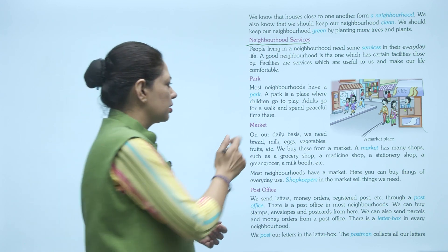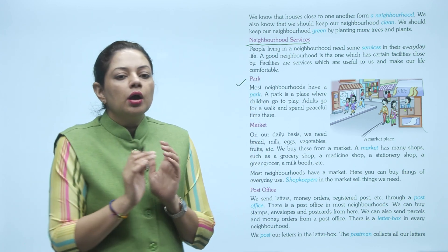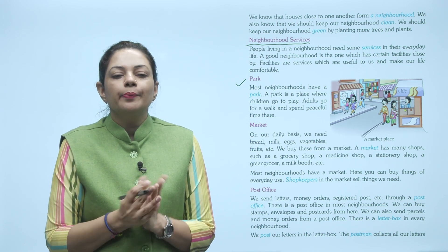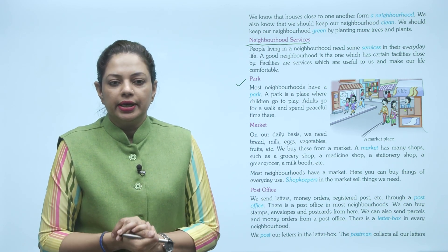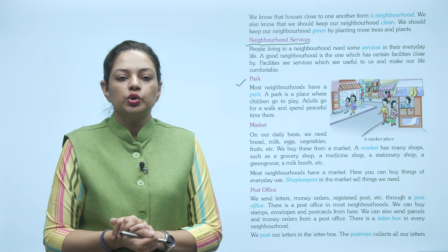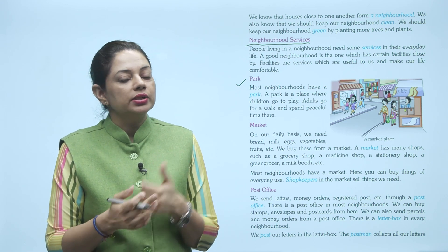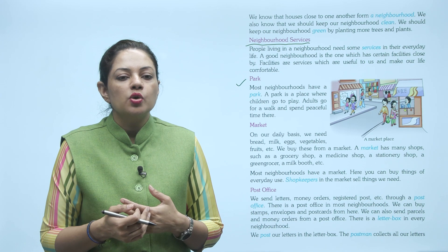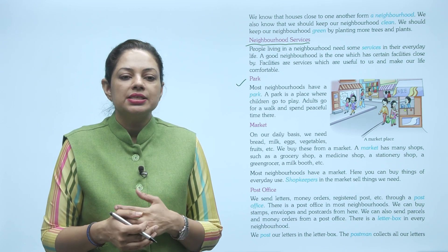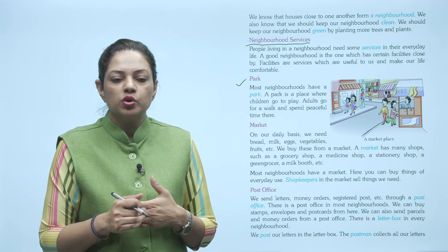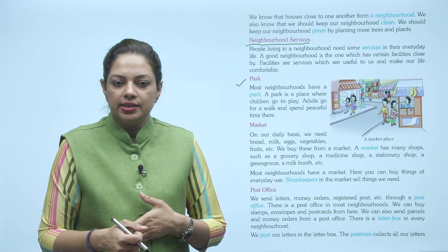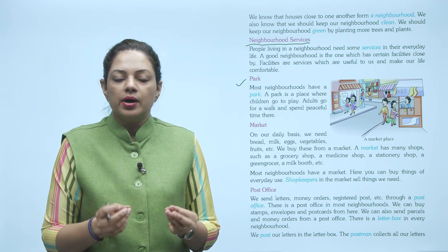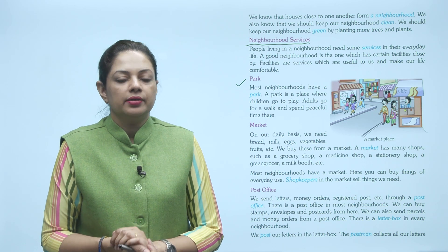First hai park. Most neighborhoods have a park. Zyada tar neighborhoods mein ek park hota hai. Park is a place where children go to play. Park kya hota hai? Ek aisi jagah hoti hai jahan bacche khelne jaate hain. Adults go for a walk and spend peaceful time there. Aur bade log walk karne ke liye jaate hain aur shanti se pyaar se park mein thoda sa samay bitaate hain.